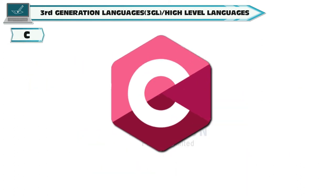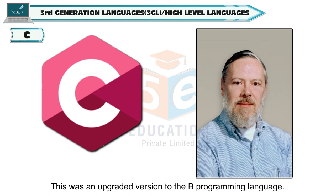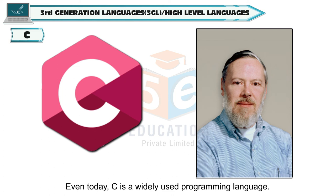C was created by Dennis Ritchie in 1972 while he was working at Bell Laboratories. This was an upgraded version of the B programming language. The language gained popularity and commercial success over the years. Even today, C is a widely used programming language.